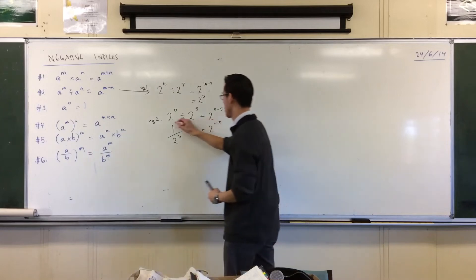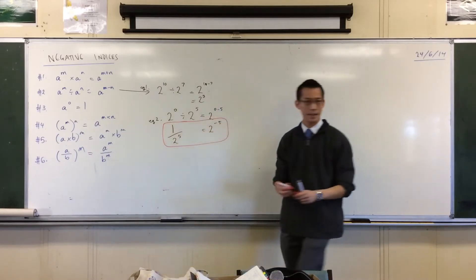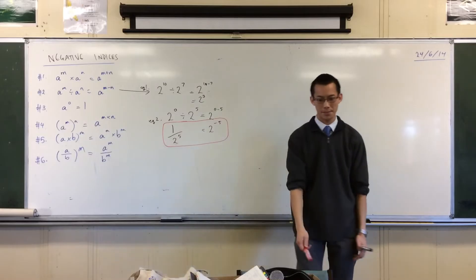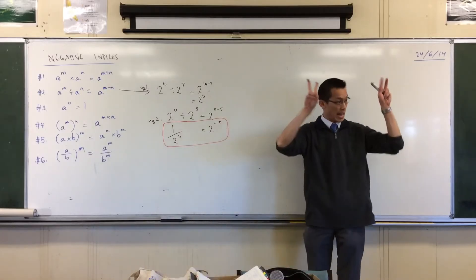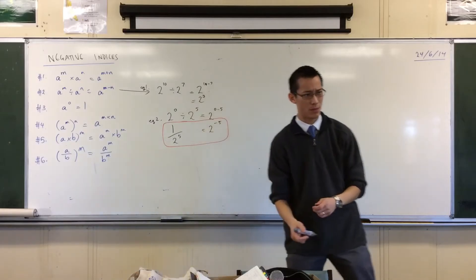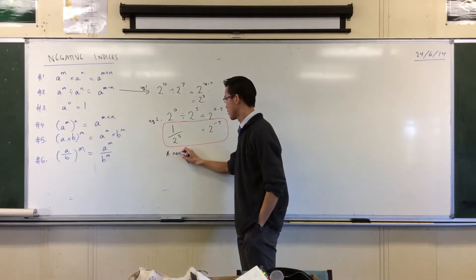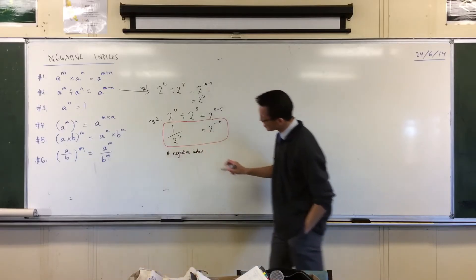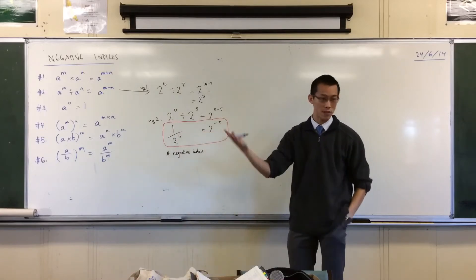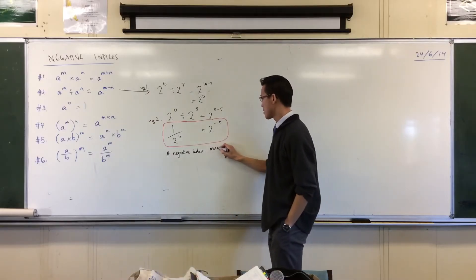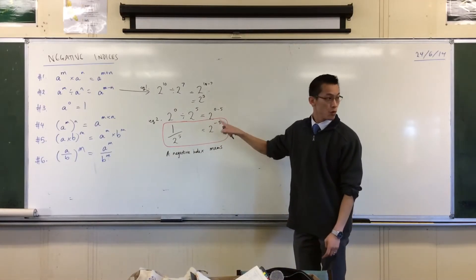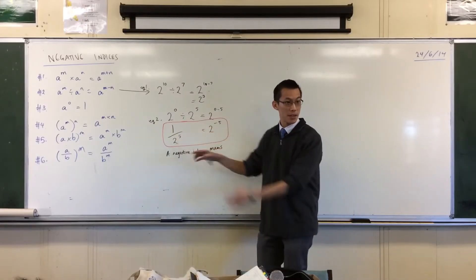Now have a look at that line we've just written. You've got this 5 here, and you've got the 5 appearing again on the other side. But what's the difference between the two sides? On this side you've got the negative index. What does it mean? How would you explain what's going on? A negative index. There are halves in there, aren't there? It is a half times a half times a half times a half times a half — five times. A negative index means the base — that 2 — moves to the denominator. It becomes a fraction.